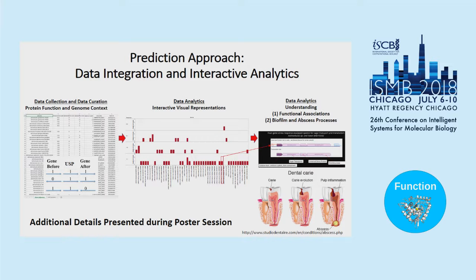This leads us to our first approach. We used IMG to extract data of our genome of interest, actinomyces, where we were able to organize each genome in Excel and study how the gene was transcribed. The gene before the universal stress protein was marked one if it was going in the same direction as the universal stress protein, or zero for a gene not being present or if it's going in the opposite direction.